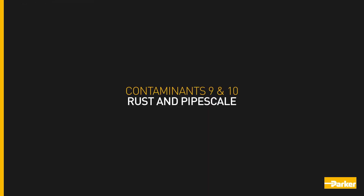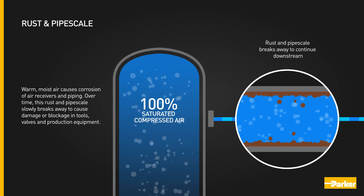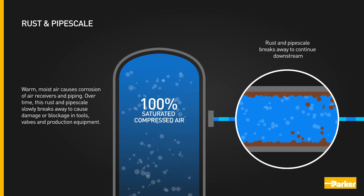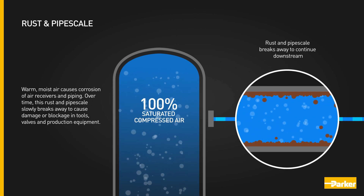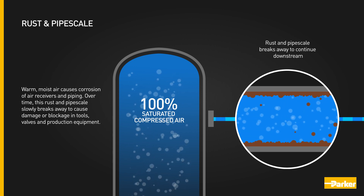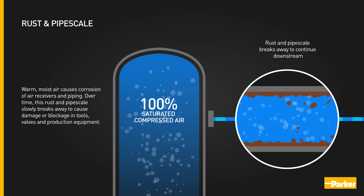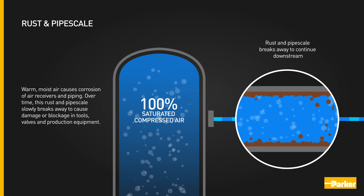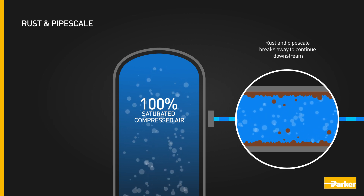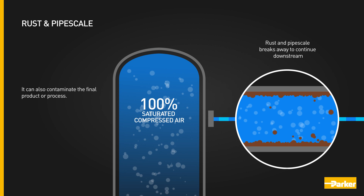Contaminants 9 and 10: rust and pipe scale. Warm, moist air causes corrosion of air receivers and piping. Over time, this rust and pipe scale slowly breaks away to cause damage or blockage in tools, valves and production equipment. It can also contaminate the final product or process.